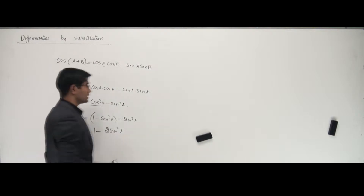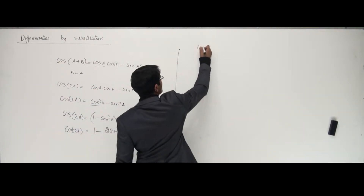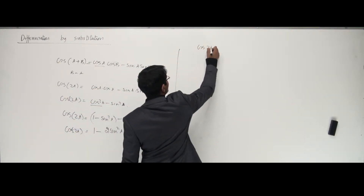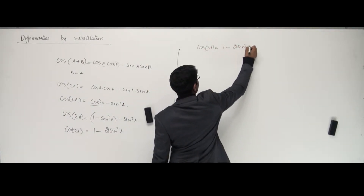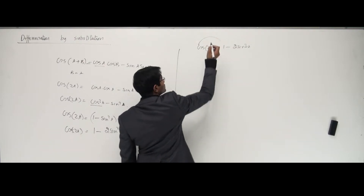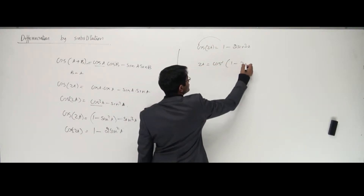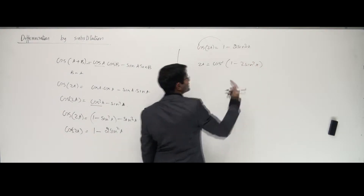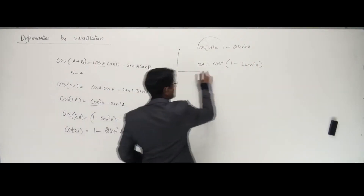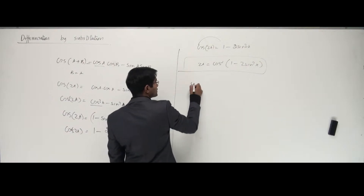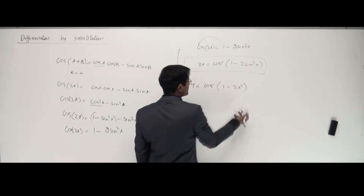Based on this, can I make problems? If cos 2a equals 1 minus 2 sin squared a, can I put cos on the other side? That is, 2a is cos inverse of 1 minus 2 sin squared a. Now based on this, let's say I have a question like y equals cos inverse of 1 minus 2x squared. Can I solve this?